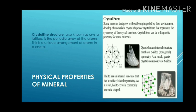Crystalline structure, also known as crystal lattice, is the periodic array of atoms — a unique arrangement of atoms in a crystal. In crystal form, some minerals that grow without being impeded by their environment develop characteristic crystal shapes that represent the symmetry of the crystal structure.